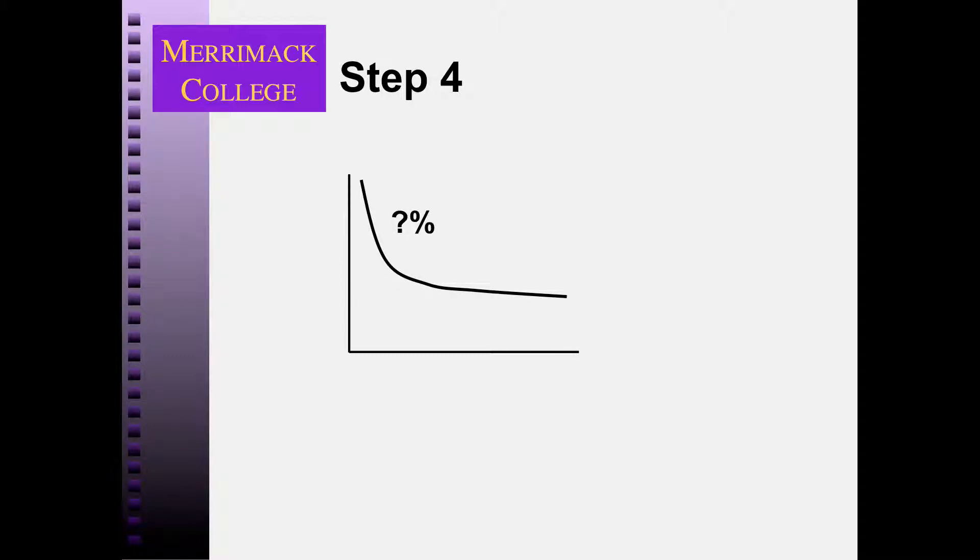So the exit speed I've found is 27 miles per hour, and the total length, remember, is a half a mile plus three quarters of a mile. So what single grade would cause this exit speed at this distance?